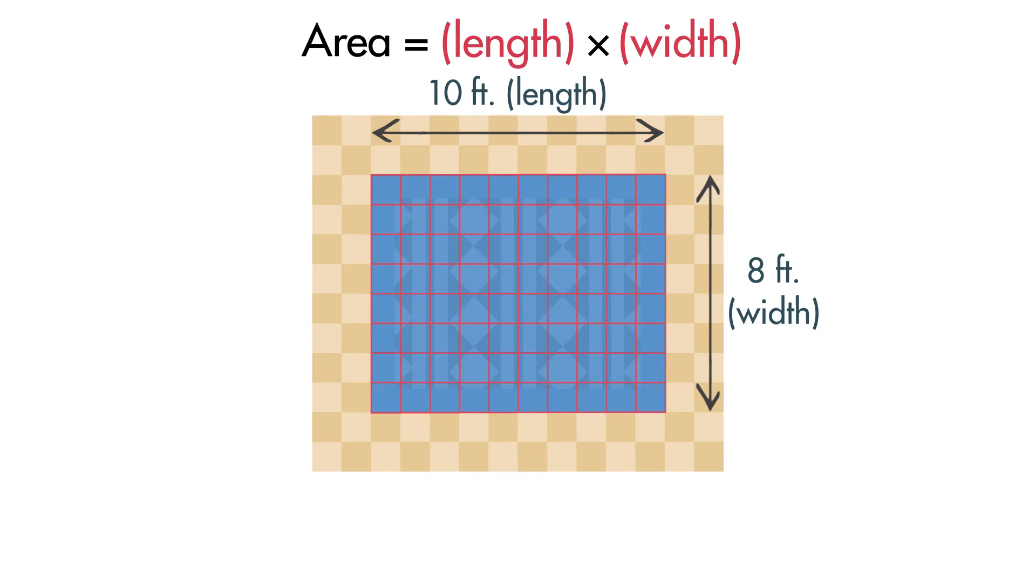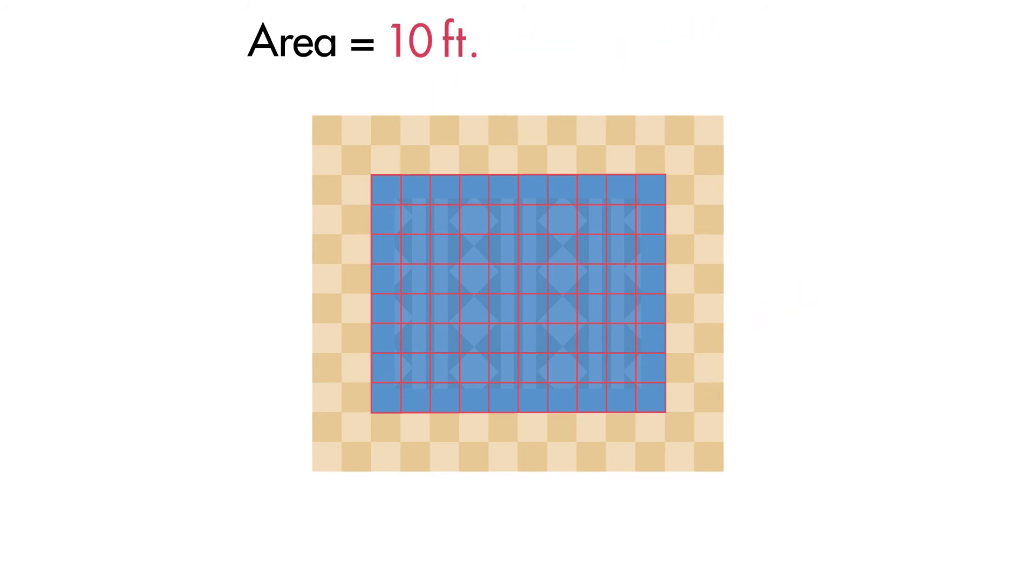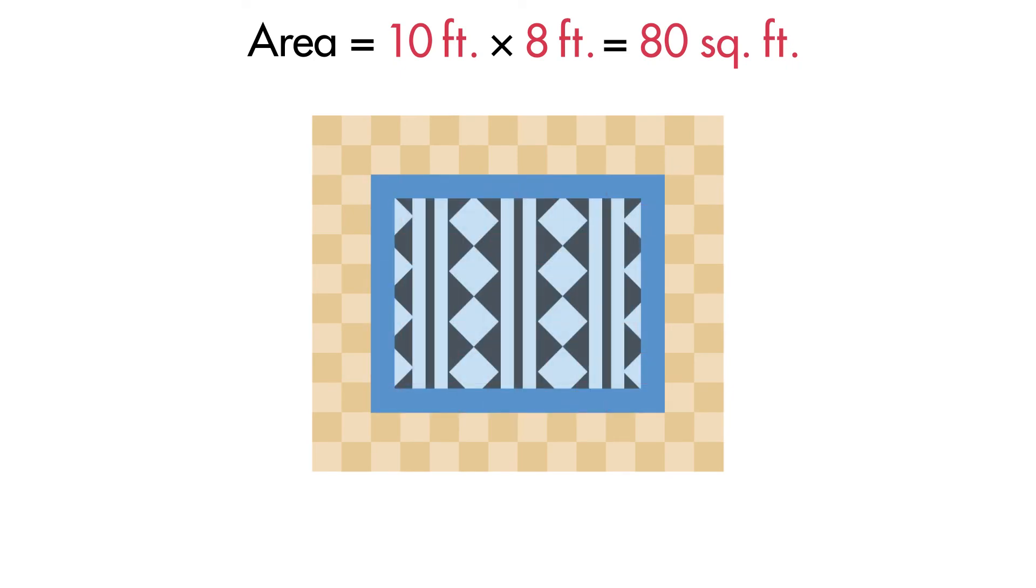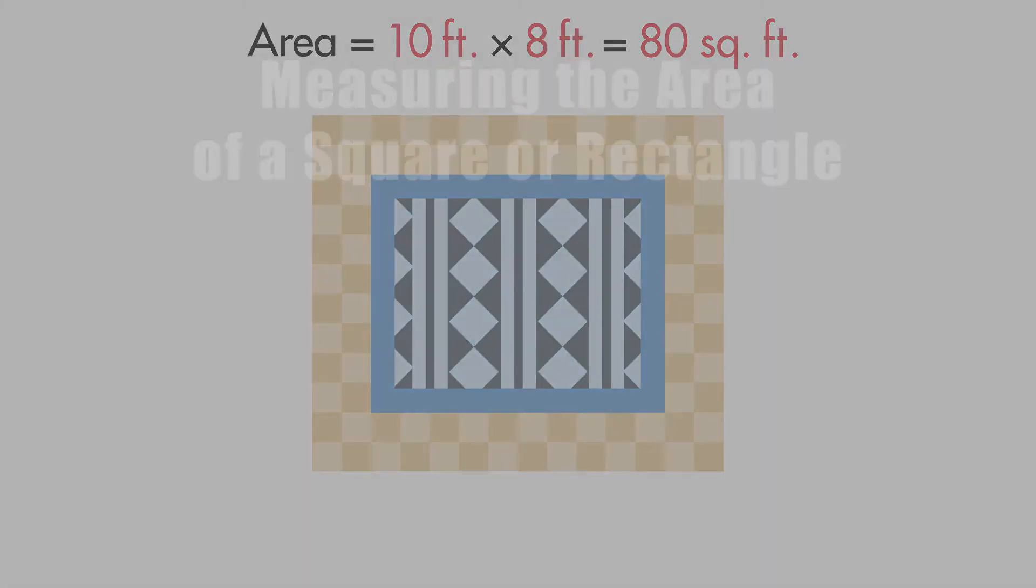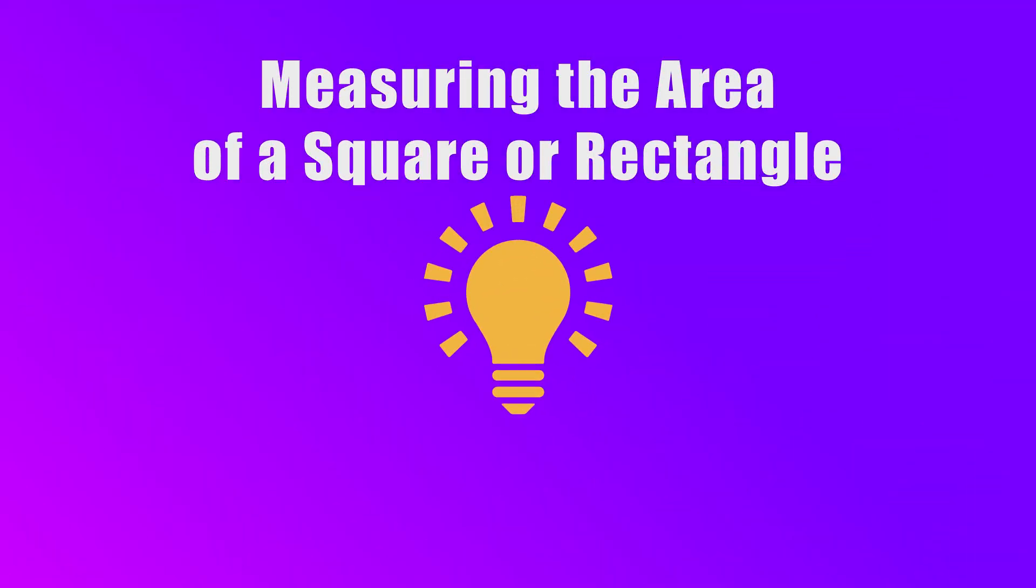Multiply the length by the width to find the area. 10 times 8 is equal to 80. Our rug covers 80 square feet. And that's how you measure the area of a square or rectangle.